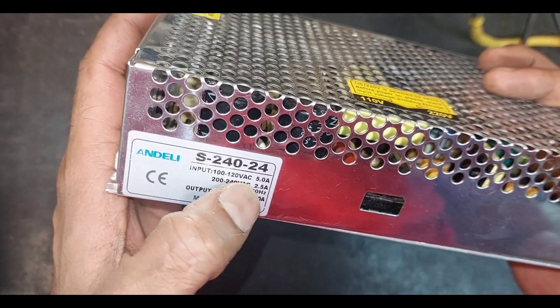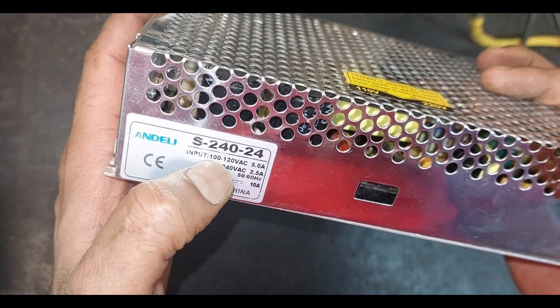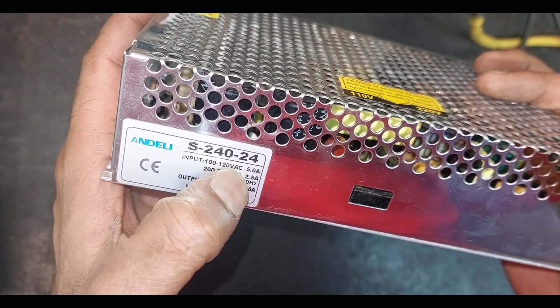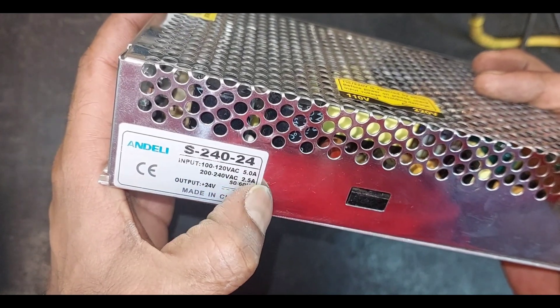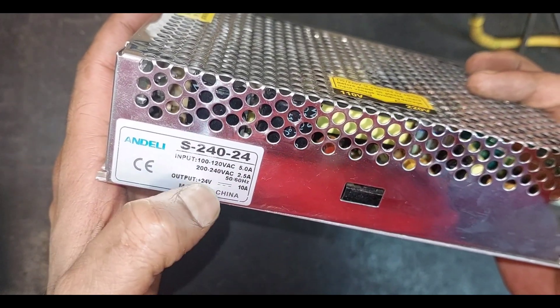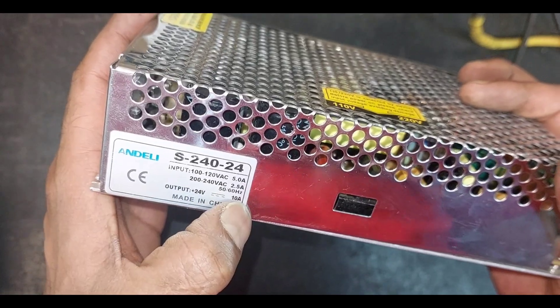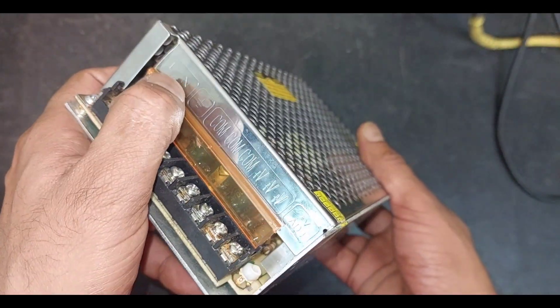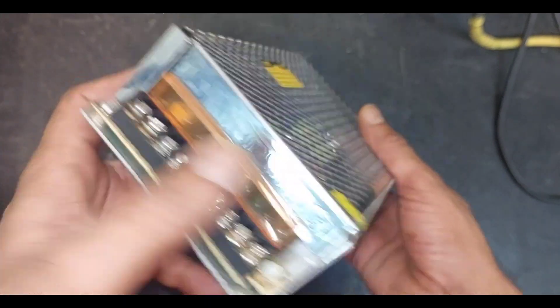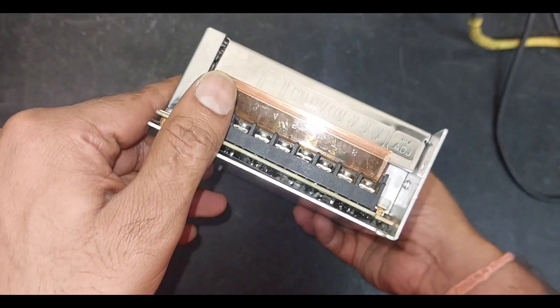Here we can see that its input voltage is 100 volt to 120 volt AC 5 ampere or 200 volt to 240 volt AC 2.5 ampere, and the output is 24 volt DC 10 ampere. The connection details are written as follows: L for line, N for neutral, COM for common, and V plus for voltage plus.